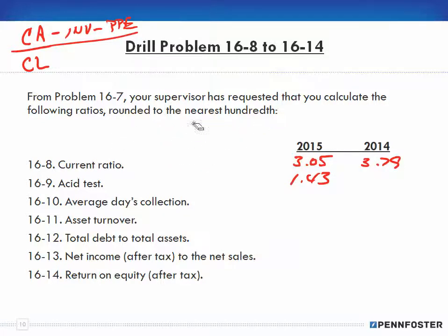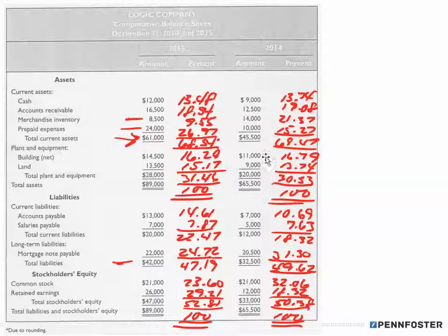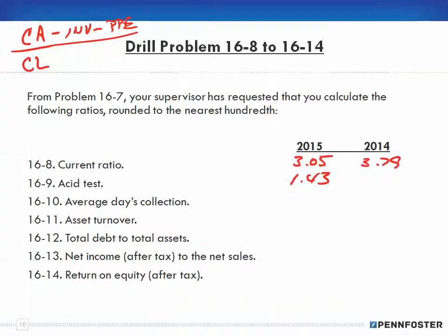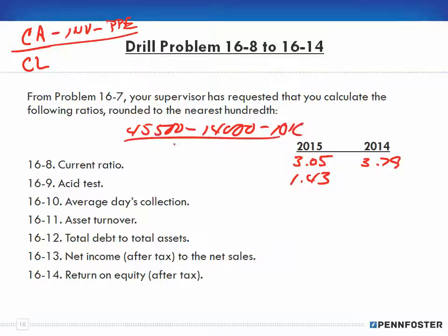For 2014 we do the same exact thing: we have 45,000 less 14,000 less 10,000, and for our liabilities we have 12,000. When I'm working these problems, I know the formula, I go back and retrieve the information from the financial statements, plug it into the formula, do the math, and this gives me 1.79 as my ratio.